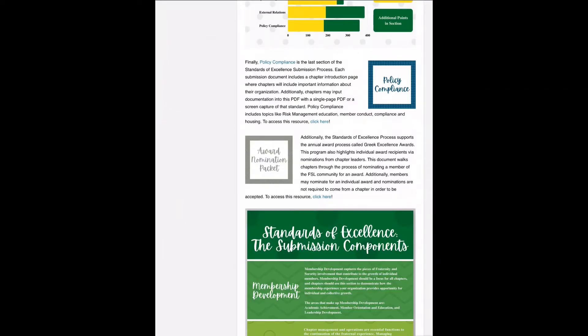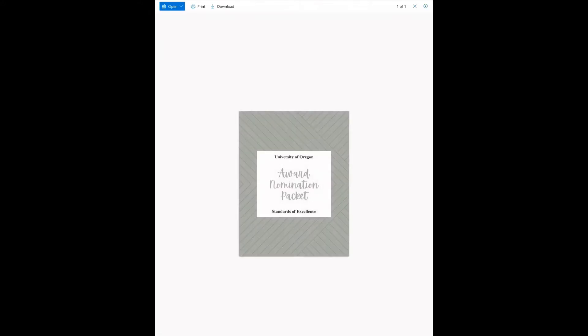First, let's start with the awards nomination packet, as this will be the primary tool you will need. This document can be found on the FSL website under the submission documents. It's directly below the policy compliance document.